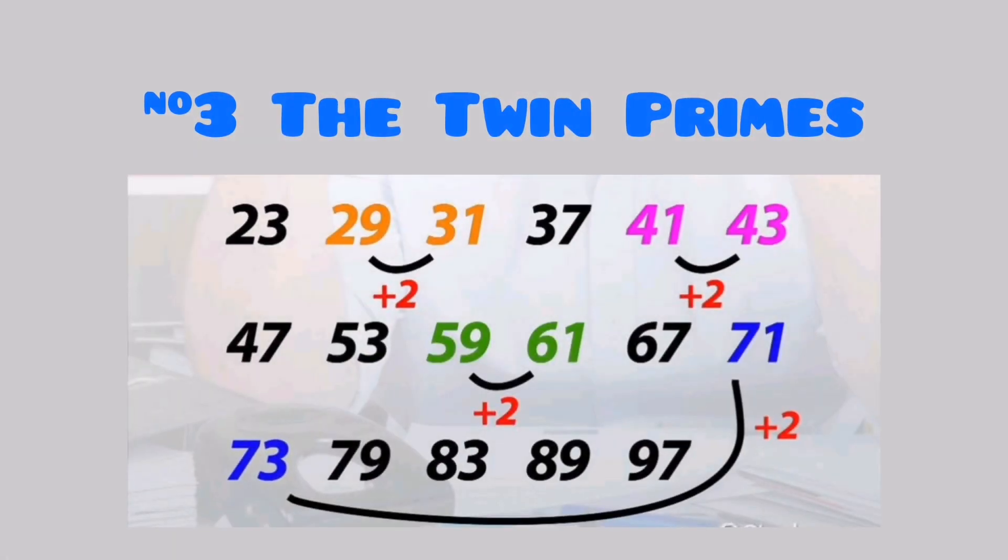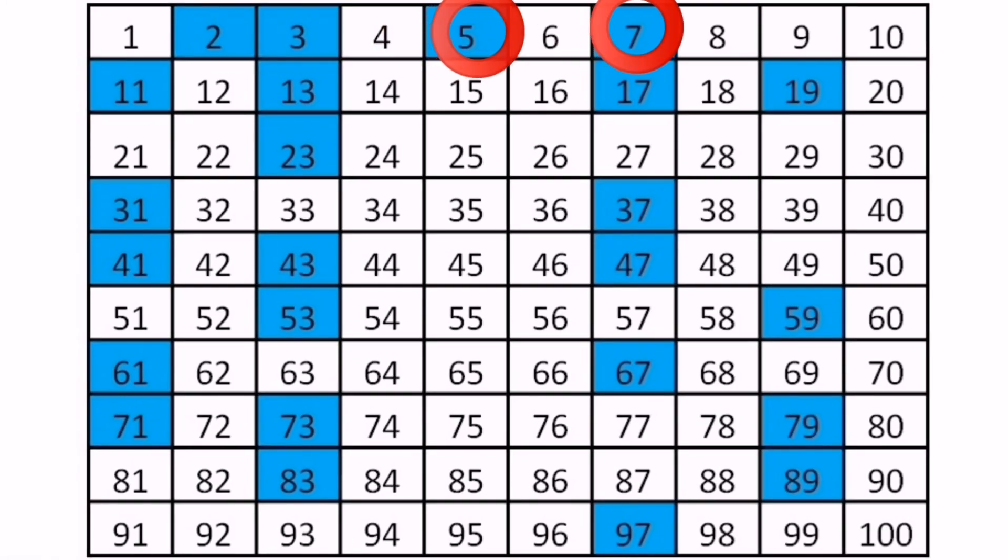Number 3. Twin Prime Numbers. The Twin Prime Conjecture, also known as Polignac's Conjecture, in number theory, states that there are infinitely many twin primes, or pairs of primes that differ by 2.